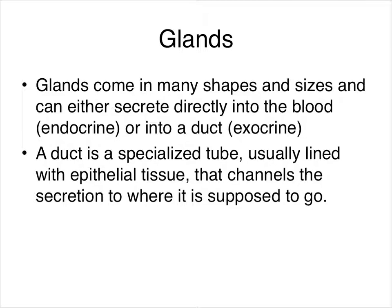There are many shapes and sizes of glands. Some are large and complicated; some are small and may have only a single function. Generally speaking, glands are either secreting directly into the blood — in which case they are endocrine glands — or they secrete into a duct that typically leads somewhere outside of the body, either onto the skin or into one of the body's interior areas that have access to the outside world.